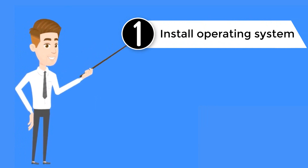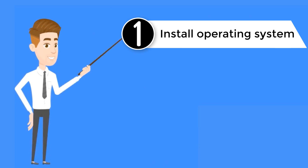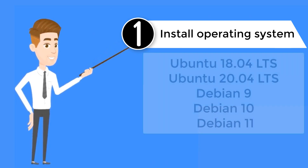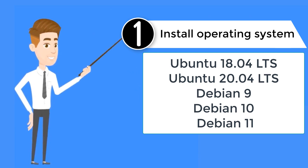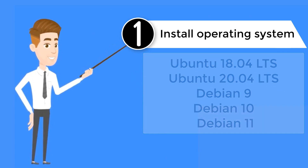Step 1: Make sure that your server is running a supported operating system — AMD64 or ARM64. Supported systems include Ubuntu 18.04 LTS, Ubuntu 20.04 LTS, Debian 9, Debian 10, and Debian 11.